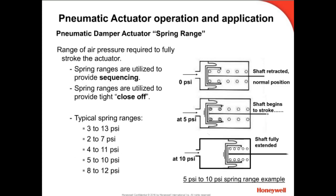The return springs in pneumatic actuators are available in spring ranges. A spring range is the air pressure required to begin the stroke through to the pressure required to complete the stroke. Spring ranges are available to complement a sequencing control scheme, or a particular spring range may be selected to provide adequate close-off pressure for a damper. In this example, the 5-10 psi spring will not begin to compress until 5 psi of air is applied to the diaphragm. From 5-10 psi, the shaft will move toward the fully extended position. Above 10 psi, the shaft remains extended. If this example was applied to a normally closed damper, the damper would be held closed with 5 pounds of spring pressure, which is the close-off pressure holding the damper closed.